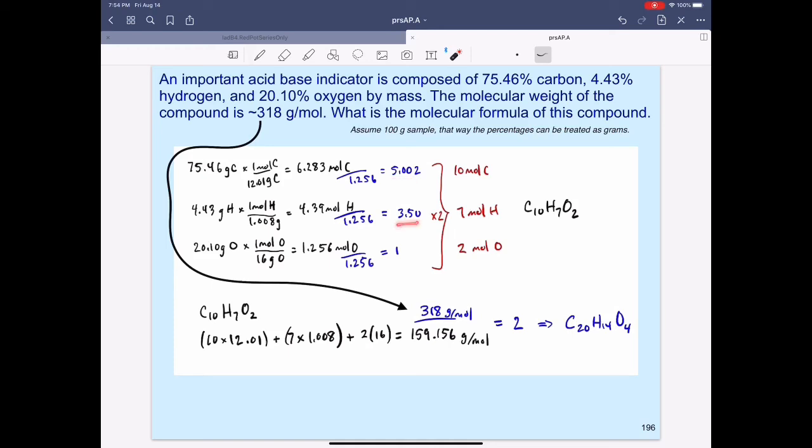While certainly we don't need this .002, that's close enough to 5, you should not round this 3.5 down to 3 or up to 4. That should be a signal to multiply all of these mole values by 2, resulting in 10, 7, and 2.